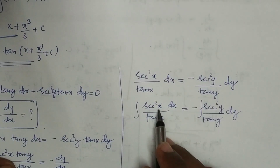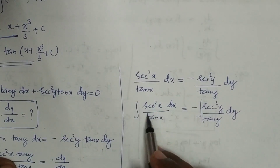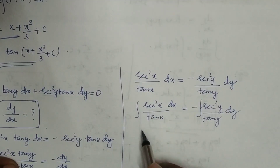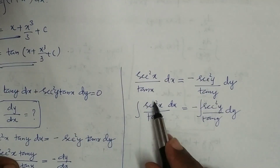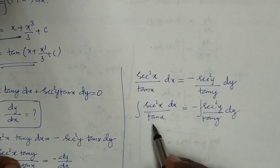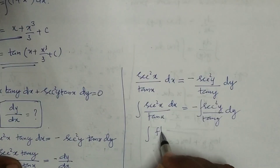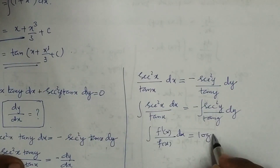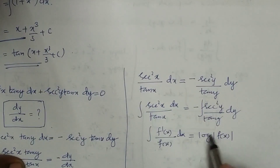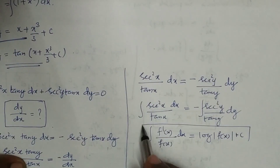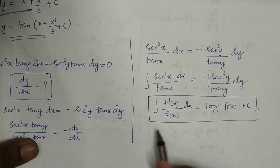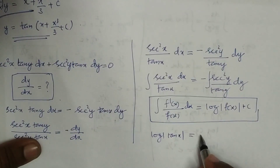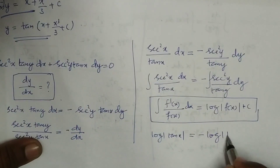To evaluate ∫cos²x/tan(x) dx, we note that cos²x/tan(x) = cos(x)·cos(x)/sin(x)·(1/cos(x))... Using the formula ∫f'(x)/f(x) dx = log|f(x)|, since the numerator is the derivative of the denominator, we get log|tan(x)| on the left.